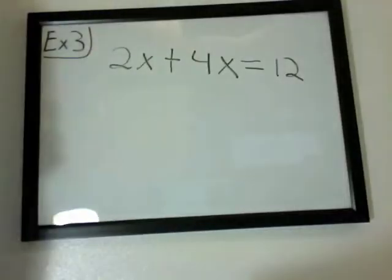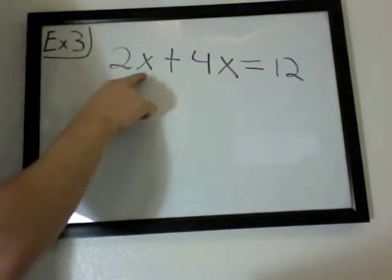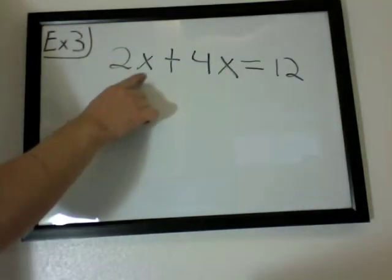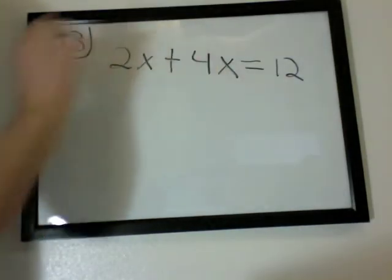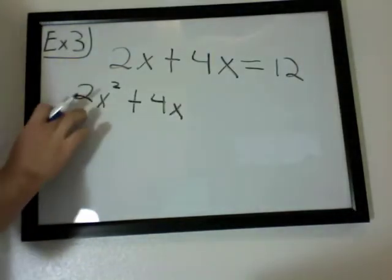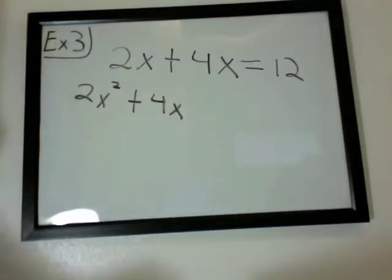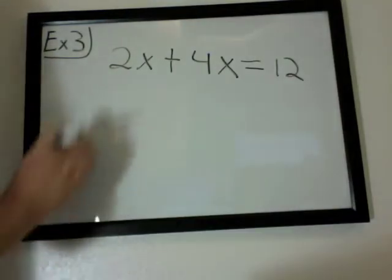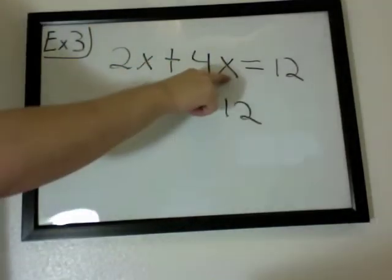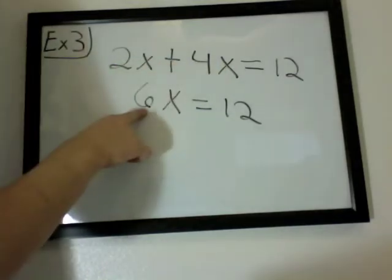Example number 3. In this case, we have 2x plus 4x. Since they're the same degree, they only have x to the first power. That means you can add those together as long as they're in the same degree. Now if you had a different degree between the two of them, like 2x to the second power and 4x, you could not add them. They have to be the same degree. So let's add them together. 2 plus 4, that would be 6x. You just add the two coefficients together and keep the x. So you add them together, you get 6x equals 12.